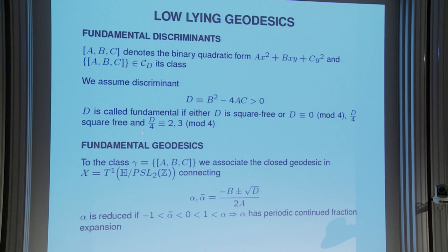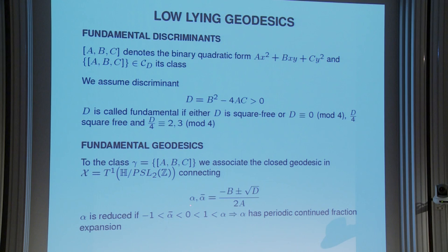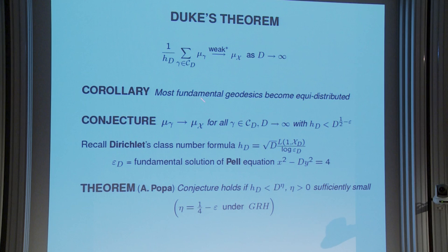The collection of these quadratic forms can be partitioned into a finite number of classes forming the class group, where the equivalence of two quadratic forms simply means that one can be transformed into the other by an SL2Z transformation. One can associate to each class a fundamental geodesic, depending only on the class, which is the closed geodesic in the unit tangent space of the modular surface connecting alpha minus b plus minus square root d over 2a to its conjugate. We can take alpha reduced, which implies a purely periodic continued fraction.